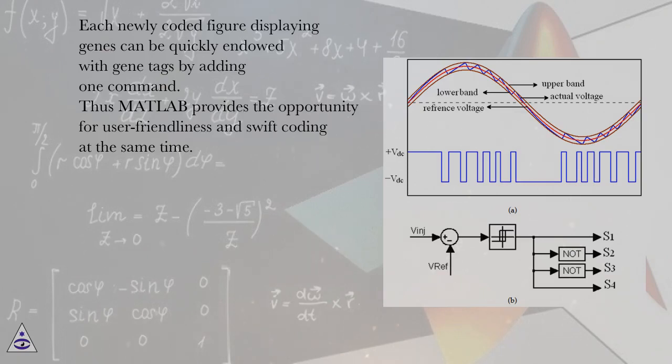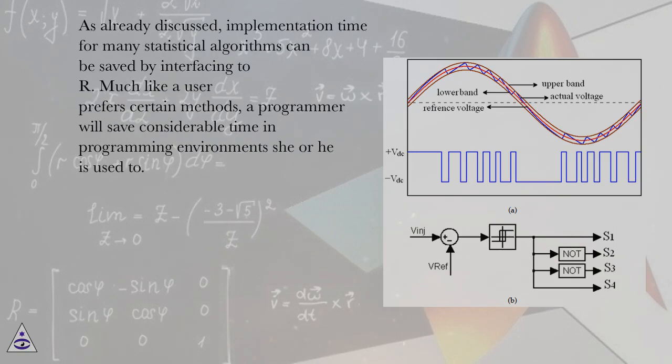Each newly coded figure displaying genes can be quickly endowed with gene tags by adding one command. Thus, MATLAB provides the opportunity for user-friendliness and swift coding. As already discussed, implementation time for many statistical algorithms can be saved by interfacing to R. Much like a user prefers certain methods, a programmer will save considerable time in programming environments she or he is used to.